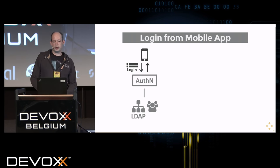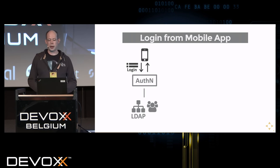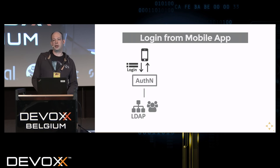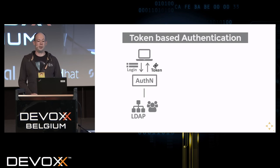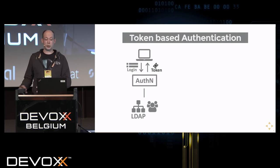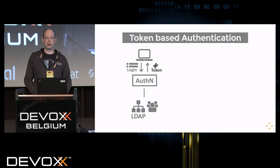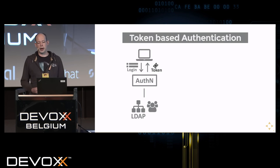Authentication and login mean you provide your credentials to the central service and receive something in return. In modern scalable systems, that something is a token — you exchange your username and password or other credentials for a token that proves the authentication service has validated your identity.